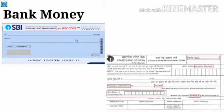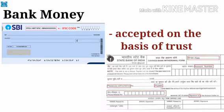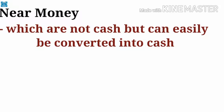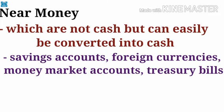Next we have bank money. Those deposits which can be withdrawn through bank check or bank draft are called bank money. Anyone who has deposited money in the bank has the right to withdraw it, and these deposits can also be transferred through a check from one person to another. This bank money is also called fiduciary money, as checks are accepted on the basis of trust. Unlike standard money, a person can refuse to accept a check as a means of payment. Near money consists of highly liquid assets which are not cash but can easily be converted into cash — for example, savings accounts, foreign currencies, money market accounts, treasury bills, etc. Near money cannot be used as a medium of exchange directly; it needs to first be converted into demand deposits.